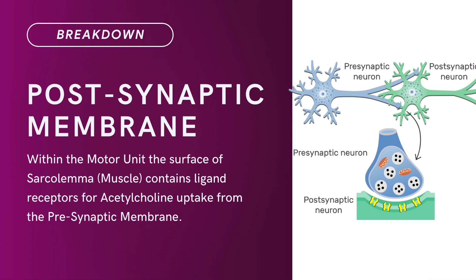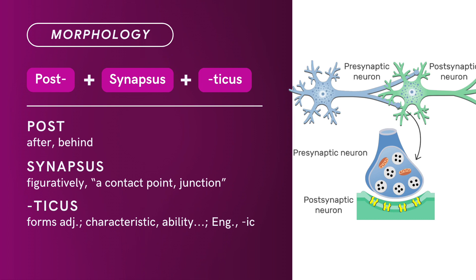Compound Term: Post-Synaptic Membrane. Brief Definition: Within the motor unit, the surface of the sarcolemma — meaning the muscle — contains ligand receptors for acetylcholine uptake from the pre-synaptic membrane. Term Morphology is a compound of post plus synapsis plus -eidicus. Post means after or behind. Synapsis figuratively means a contact point, a junction. -Eidicus is a suffix that forms adjectives denoting characteristic or ability.